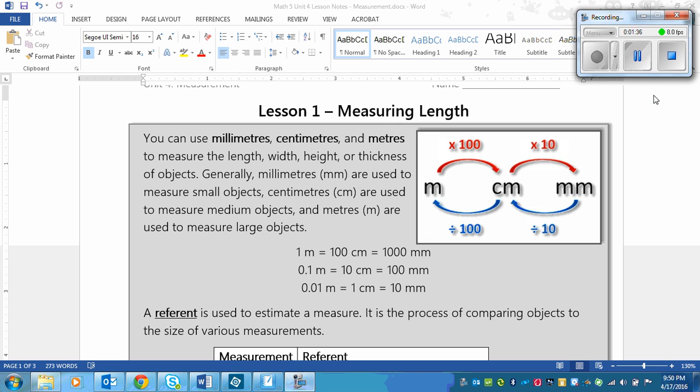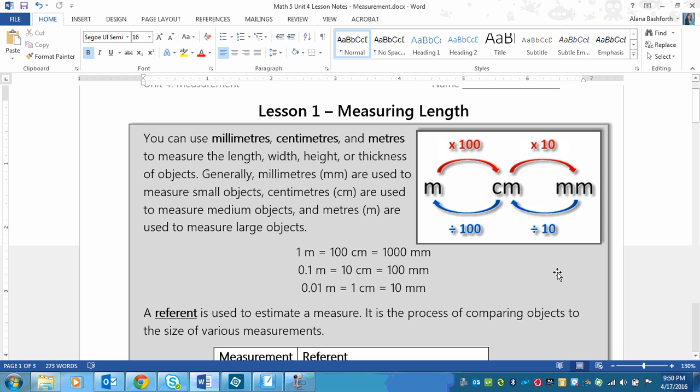So remember that in order to convert we need to know what each of the measurements are compared to each other. So one meter, if we look down here, is equal to 100 centimeters, so there are 100 centimeters in one meter, and in one meter there are 1000 millimeters, and that is because there are 10 millimeters in one centimeter.